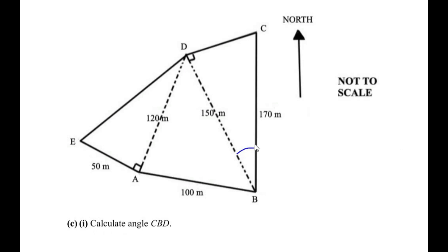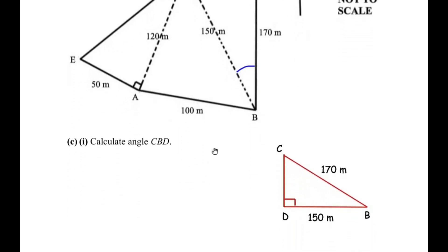We need to find angle CBD. Let us separate out right angle triangle CBD and redraw it. BD is 150 meters and BC is 170 meters. CD is opposite to the angle of concern, so it is the opposite side. BC is opposite the 90 degree angle, so it is the hypotenuse. BD is therefore the adjacent side.